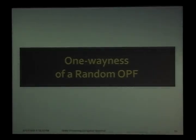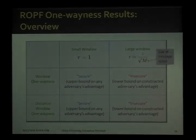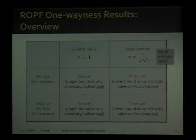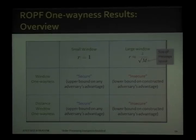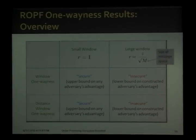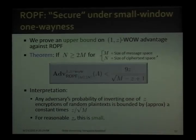Now let's look at how a random order-preserving function stacks up against our notions of one-wayness. For small-window one-wayness and small-window distance one-wayness, we find that a random order-preserving function is secure, meaning we find an upper bound on any adversary's advantage. On the other hand, for large-window one-wayness and large-distance window one-wayness — where by large I mean R is approximately Z times the number of challenge messages over the square root of the size of the message space — we find that ROPF is insecure, constructing an adversary and lower bounding its advantage very close to one.